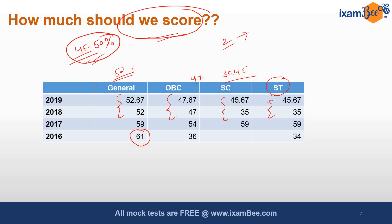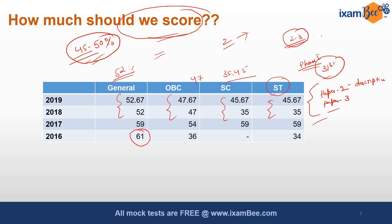The next exam will be on 31st March — there will be Paper 2 and Paper 3, which are descriptive in nature. Instead of worrying about the cutoff, we suggest you prepare for Phase 2. Worrying cannot improve your cutoff, but while worrying you might lose 2 or 3 most important days. The result might be announced in 2 to 3 days, so instead of worrying, prepare for Phase 2.